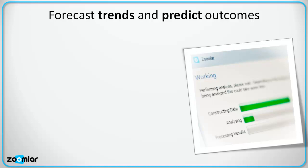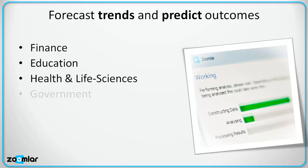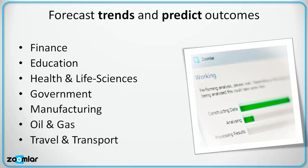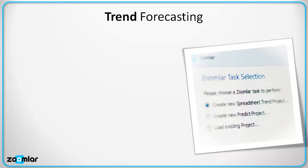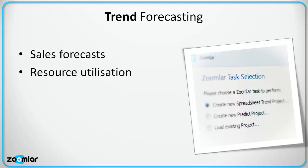Zoomlar can be used for forecasting trends in data and predicting outcomes in a wide variety of industries and organisations. Suppose you have a list of things that are measured over several hours, days or months. Examples might include the growth in sales of products on a per shop or per salesperson basis, the overall utilisation levels of IT resources such as server CPUs, storage and memory, or the consumption of items in stock for manufacturing processes.